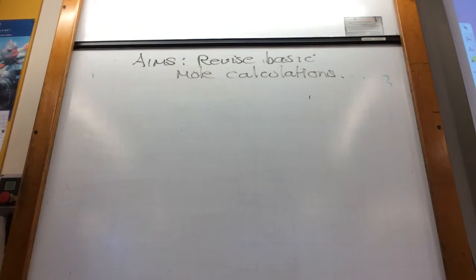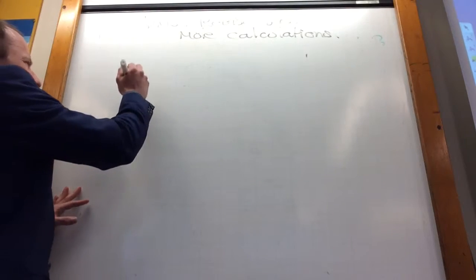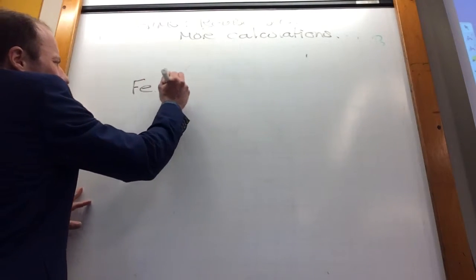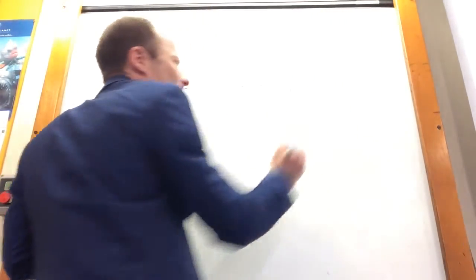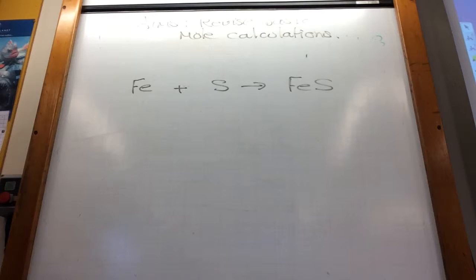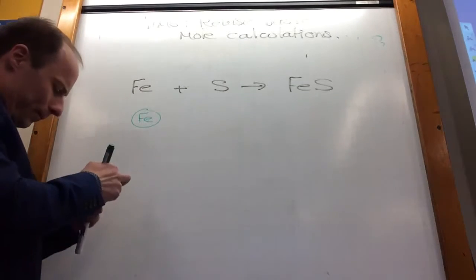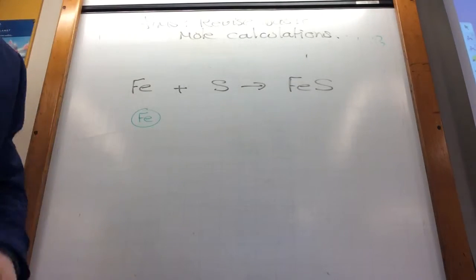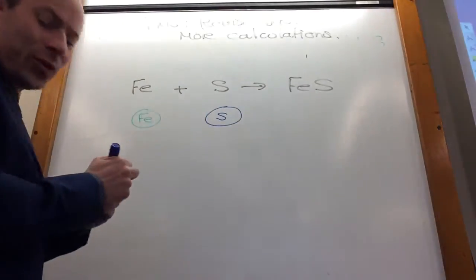Using the mole is incredibly important for chemistry. Let's go back and do some basic, let's just look at a basic equation. If I've got iron, I can react it with sulfur to give me iron sulfide. So what's that telling you? Well that's telling you if you've got an atom of iron, and you've got an atom of sulfur, they join together to give me iron sulfide, like so.